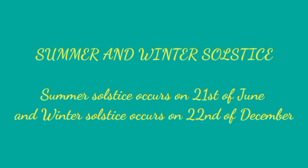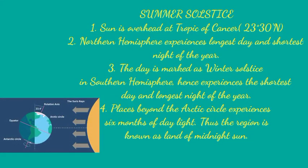Now, 21st of June and 22nd of December are two different dates with different seasons. June, July, and August are considered the summer season. On 21st of June, it is the longest day and shortest night in the northern hemisphere, and the shortest day and longest night in the southern hemisphere. So the season is opposite: while the northern hemisphere experiences summer, the southern hemisphere experiences winter.